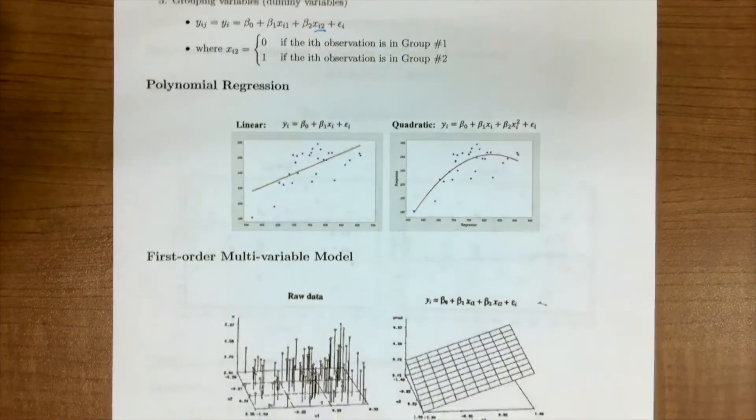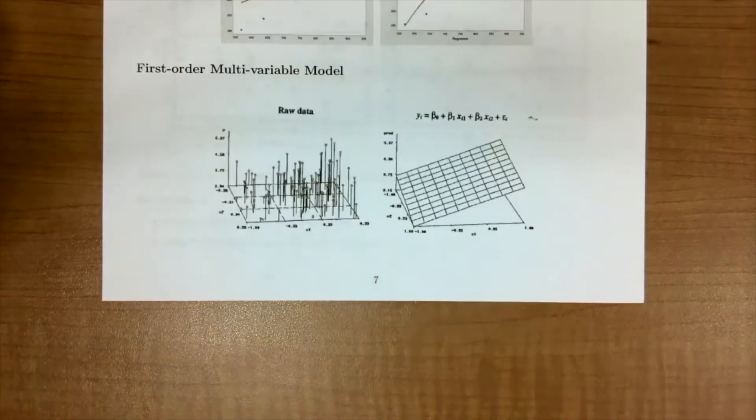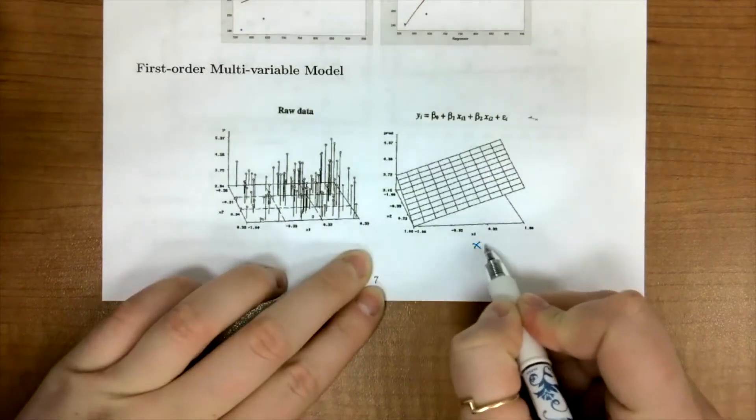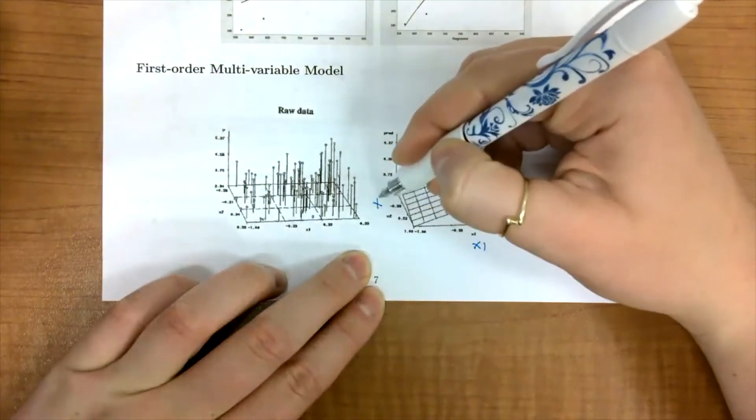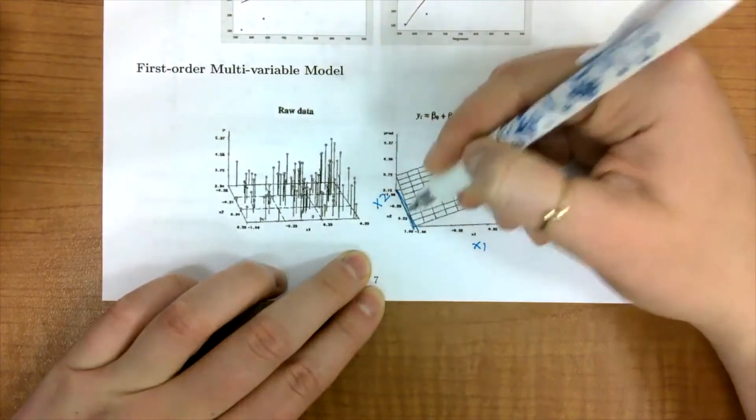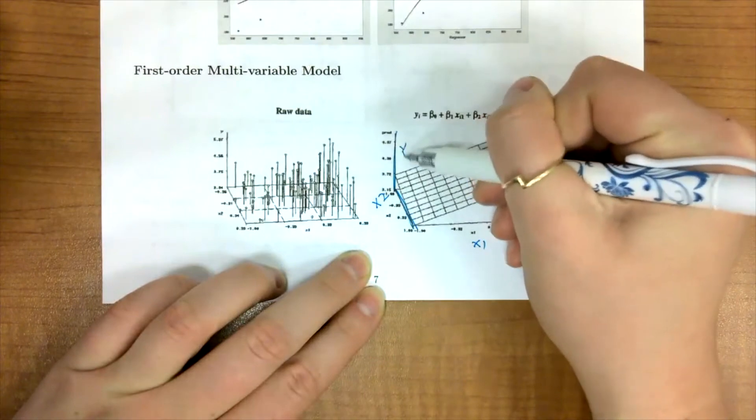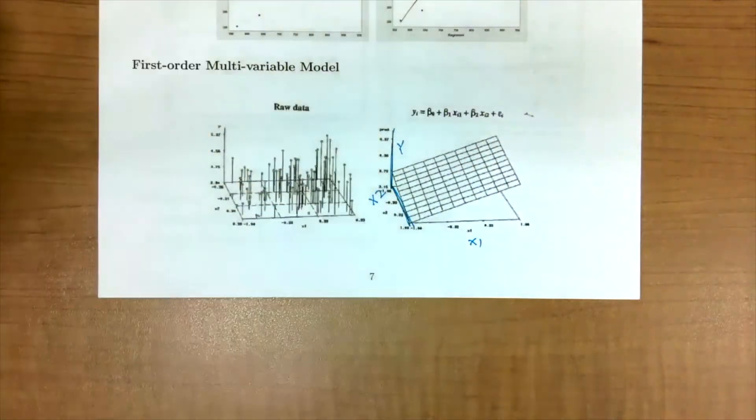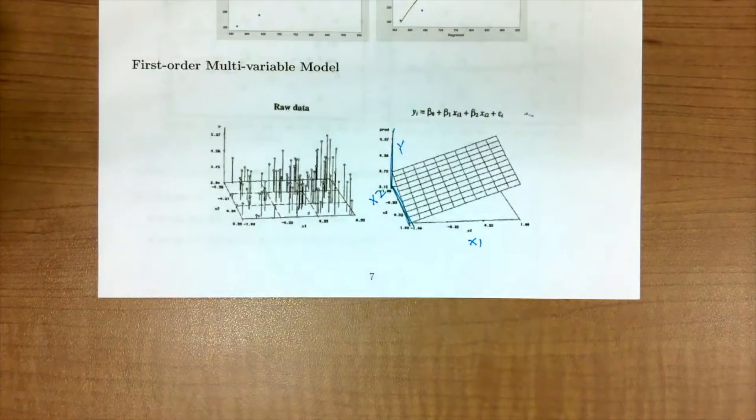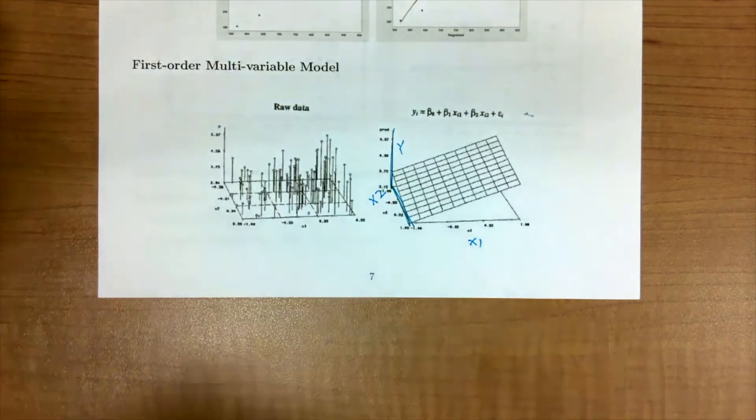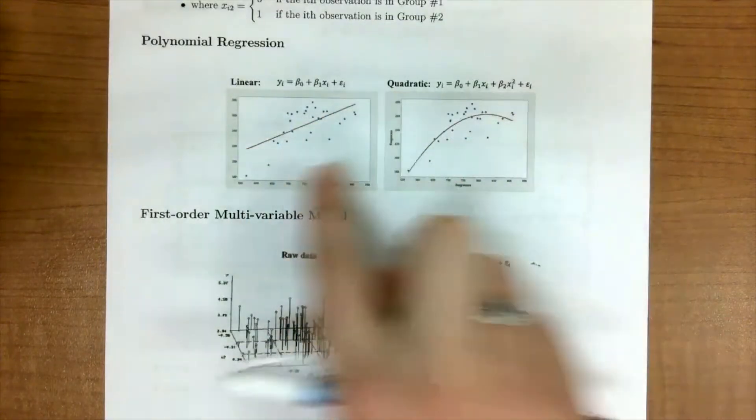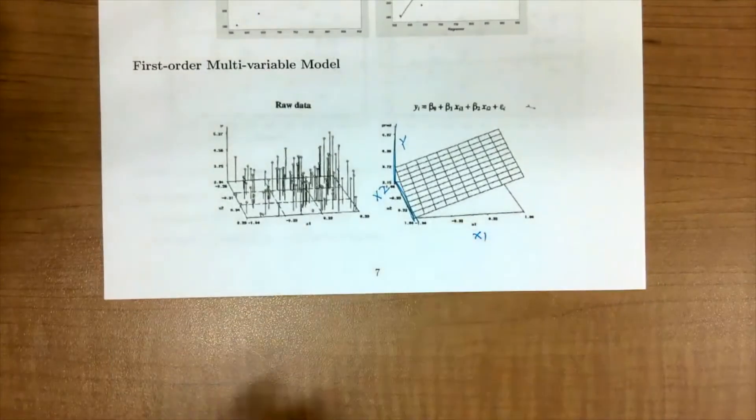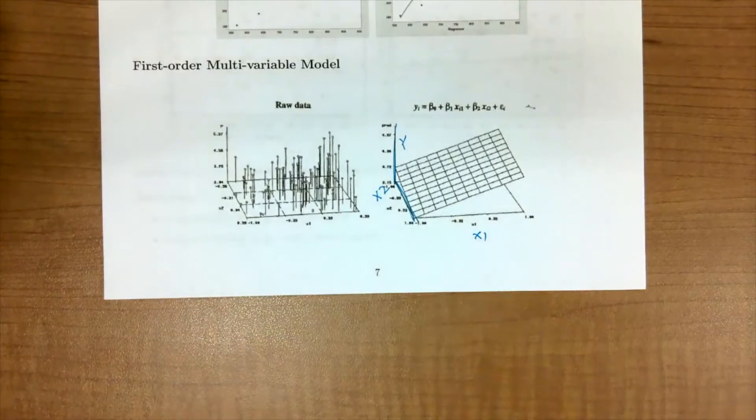We can also look at something that looks like a first order multivariable model, where we have again multiple covariates. So we would have maybe a covariate x1 on this x-axis, and then x2 on this x-axis, and then we would have our response on kind of the dimension coming out of the page. And so in this case, we're no longer just fitting a line. Now we would be fitting planes because we have that extra dimension.